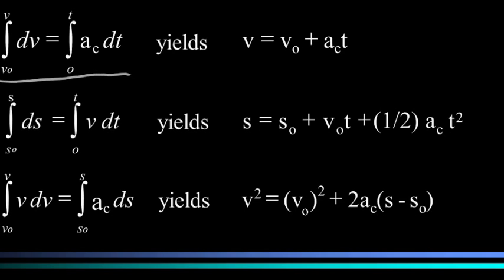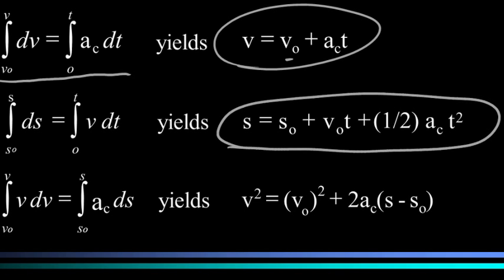Let's look at these equations. We can integrate the acceleration over time to get velocity. Since acceleration is constant, we get v = v₀ + a_c·t. We can integrate the velocity over time to get position: s = s₀ + v₀·t + (1/2)a_c·t². If you know that acceleration is a function of distance, we can integrate to get v² = (v₀)² + 2a_c(s - s₀).